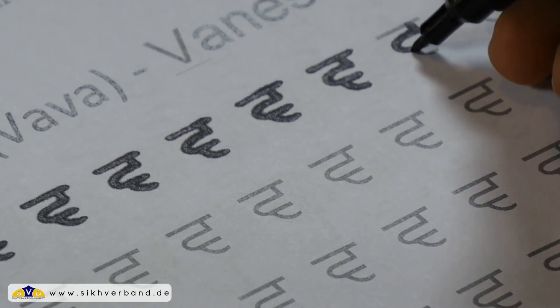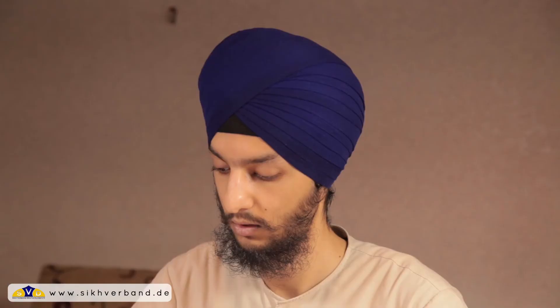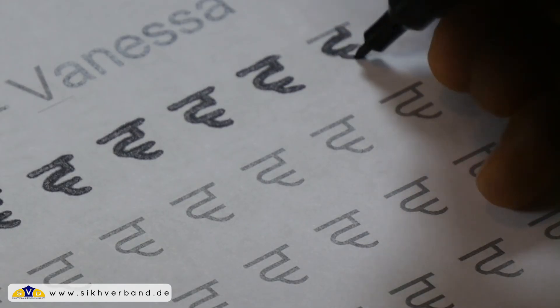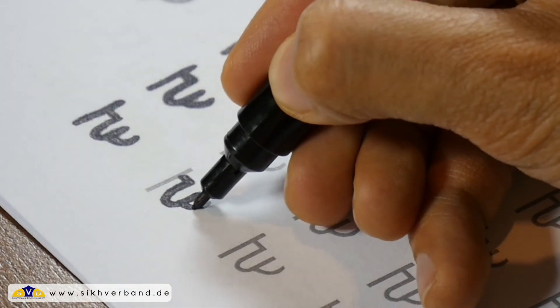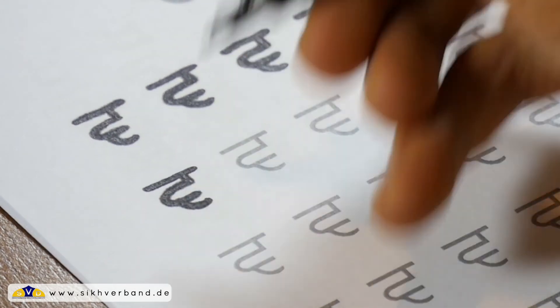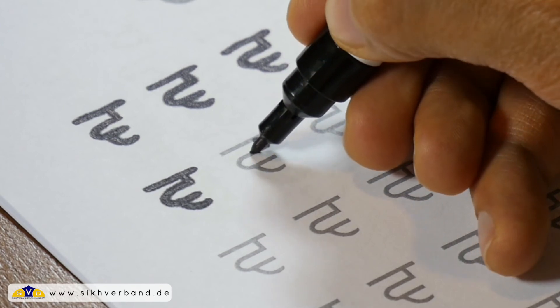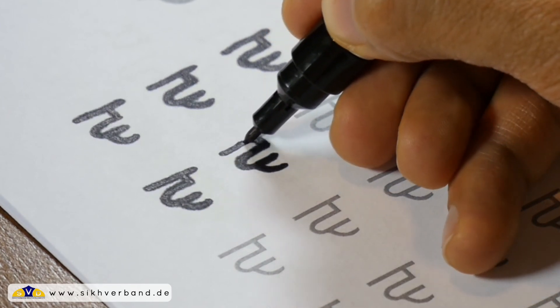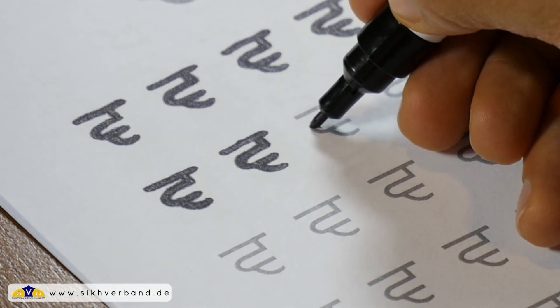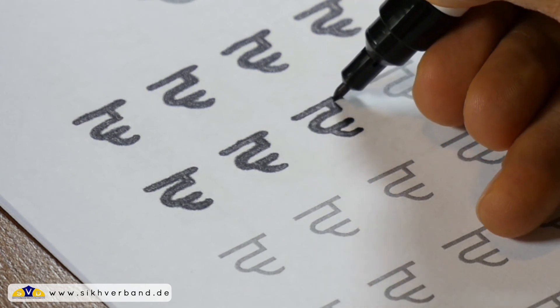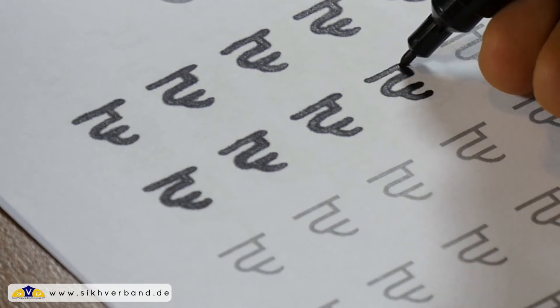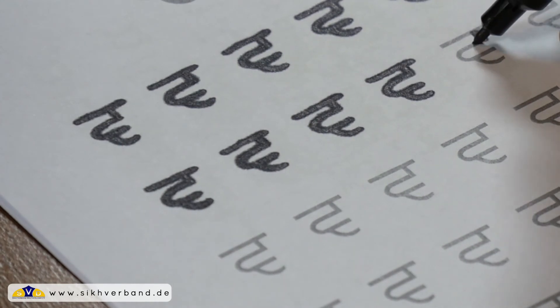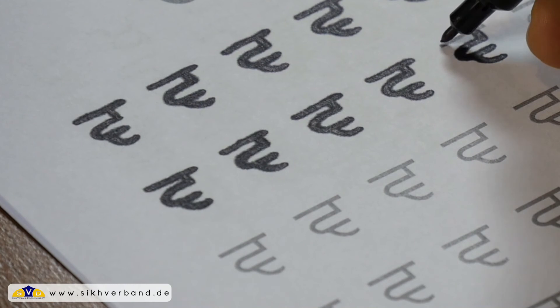Man kann das W als Eselsbrücke hierfür verwenden. Hier ist das W sozusagen um 90 Grad nach rechts geklappt, nach rechts gedreht und oben die Verbindungslinie. Die Vertikale verbindet das um 90 Grad nach rechts gedrehte W mit der durchgezogenen Verbindungslinie und stellt das Vava dar. Das W ist hier wirklich signifikant als Hilfestellung.